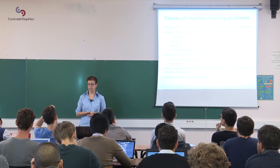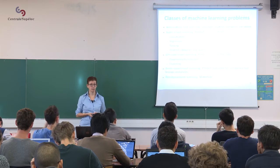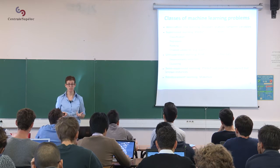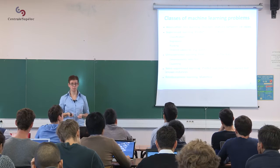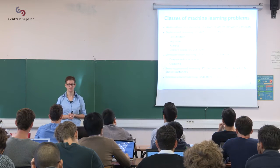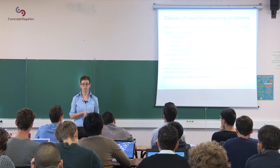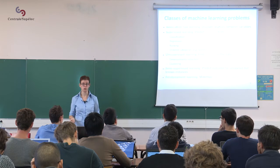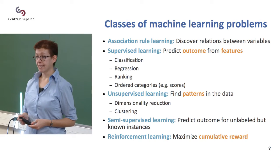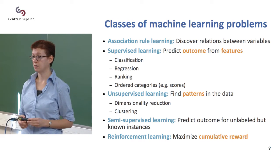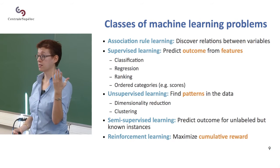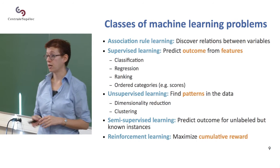Regression is learning a number — a real value. For instance, can you, from genetic variables from a person, figure out how tall that person is? And what does that tell you about the variables you've used to figure out how tall the person is? Ranking is a problem of, instead of figuring out actual values like how tall the person is, you just want to figure out who is taller than whom.